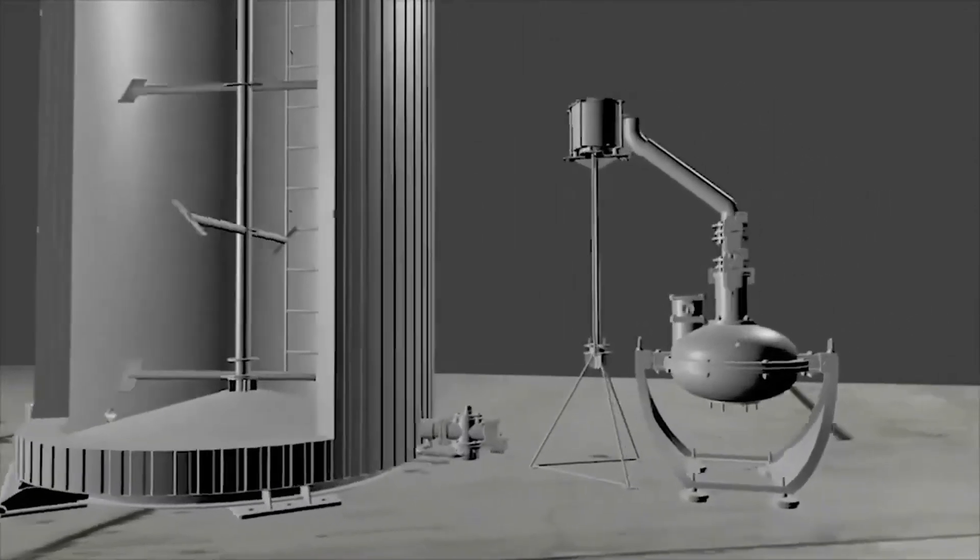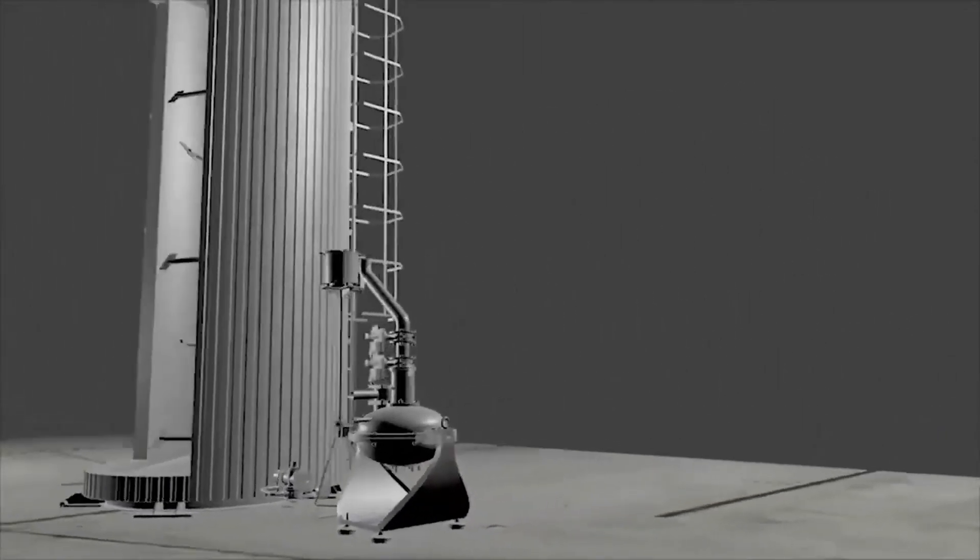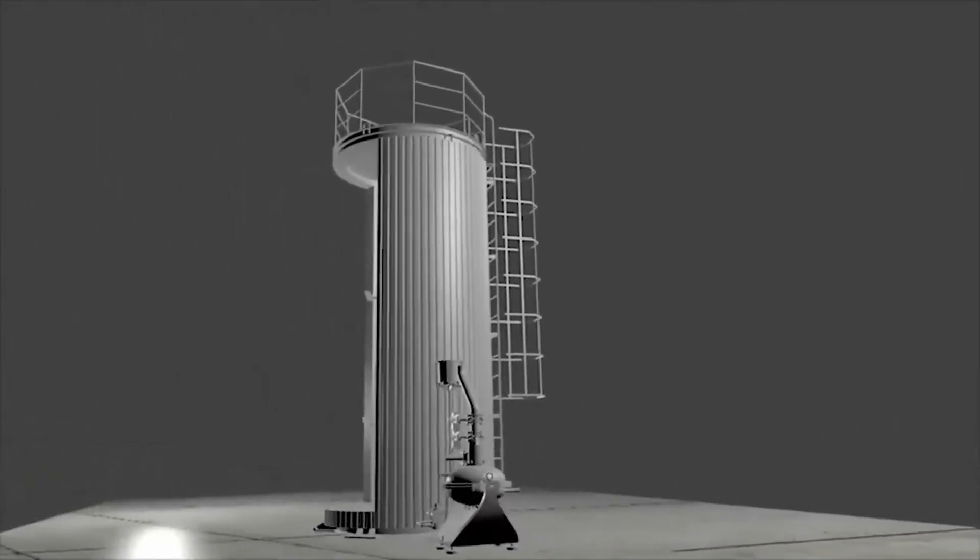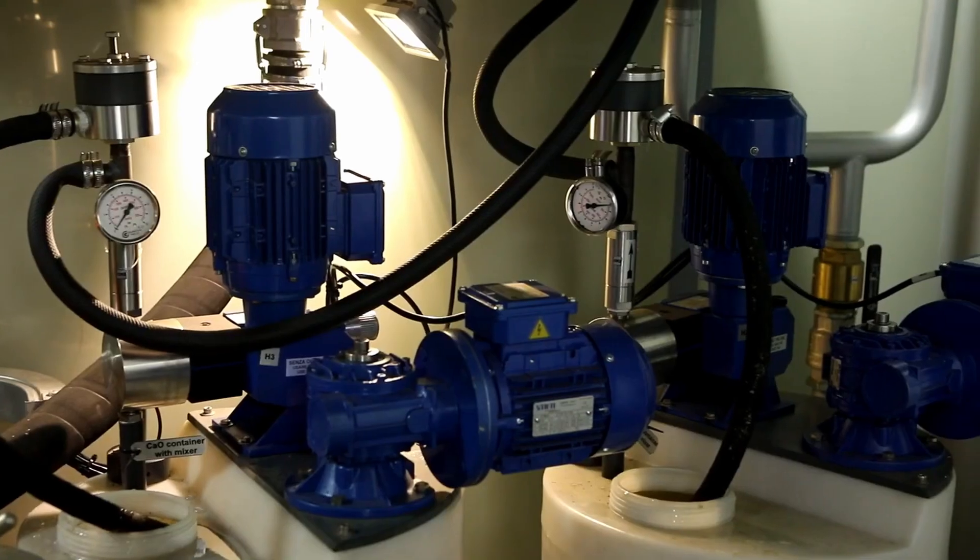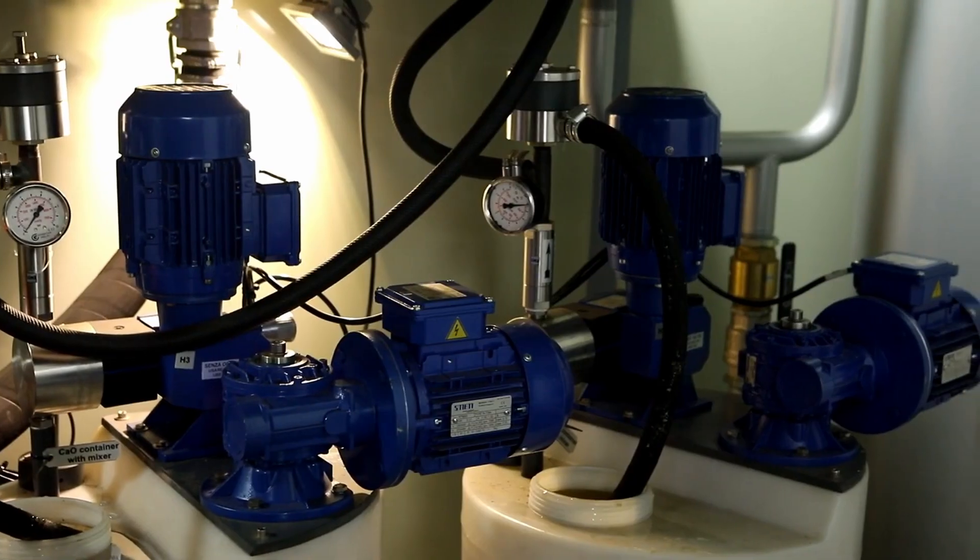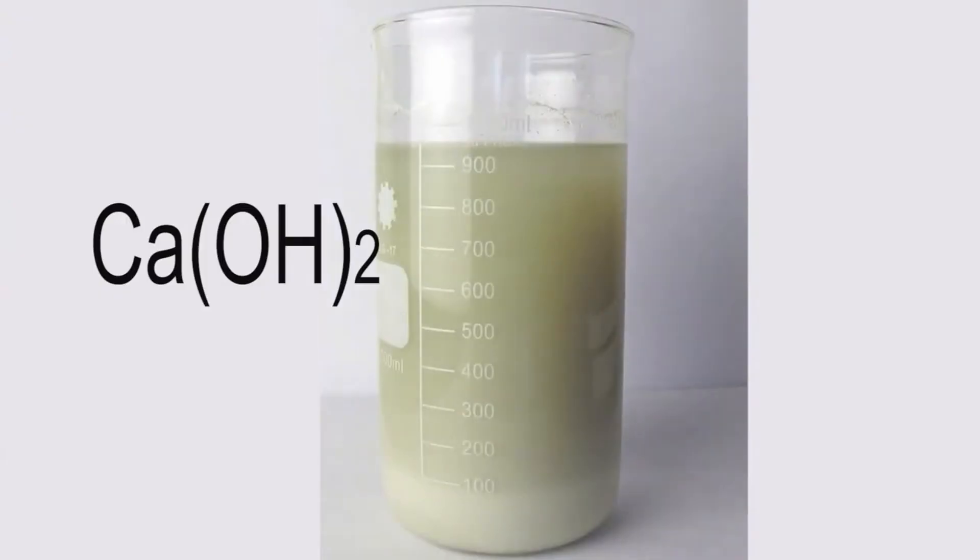At the second stage, the water is pre-mixed with a chemical agent, that is lime milk, and enters the operating chamber of the vortex layer device again where a chemical reaction for converting trivalent chromium into poorly soluble compounds ends.